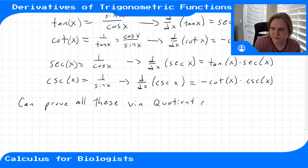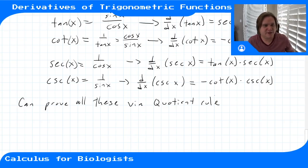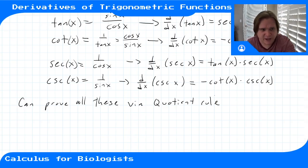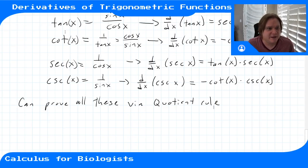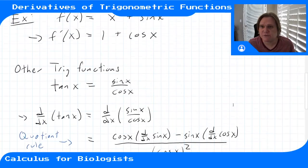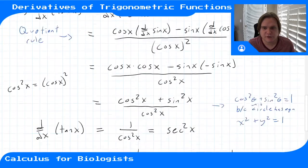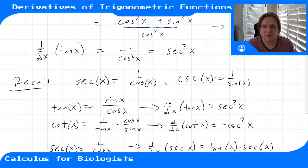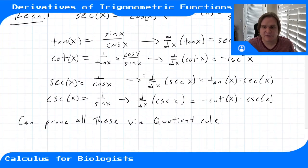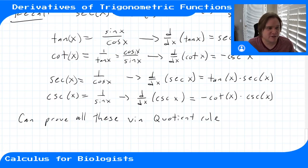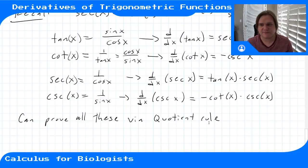Just for your reference, these are the formulas — you can memorize them, or just apply the quotient rule each time. Either way is fine. If all you memorize is sine and cosine, you can calculate the derivative of any other trigonometric function by using the chain rule or the quotient rule, since cotangent, secant, and cosecant are all quotients. You can even use the power rule on some of these.